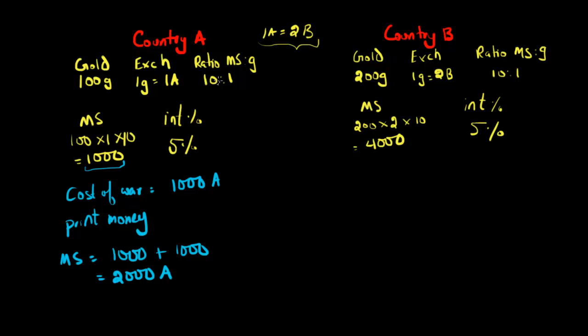Now the ratio of the money supply to gold will also change, and the ratio now will be, I'm going to write it here, the ratio of the money supply to gold will be equal to the 2,000 country A dollars to the original amount of gold in the economy. This hasn't changed because the government can't create gold, so this will still be 100.